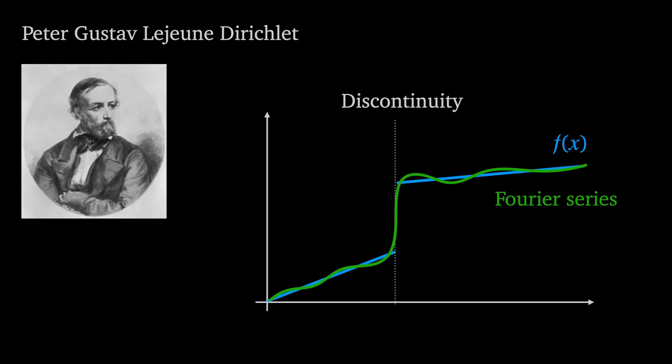Fourier series, the idea that an infinite sum of trigonometric functions converges to a function was only about 15 years old at the time and what happened at points where the functions jumped up or down wasn't clear.